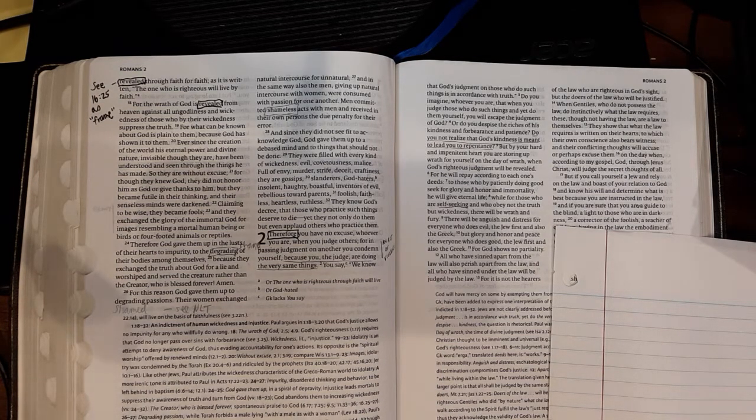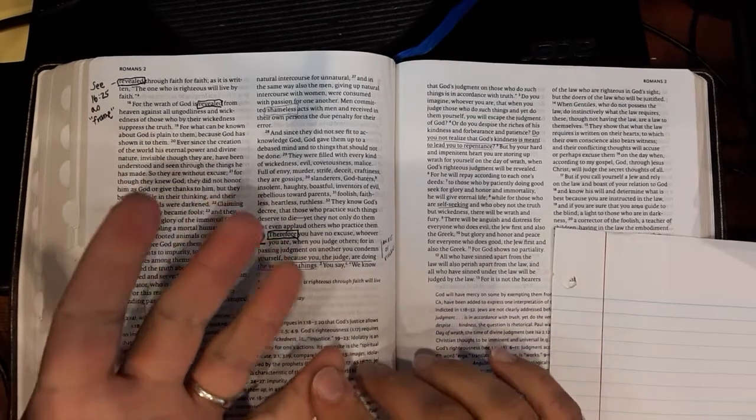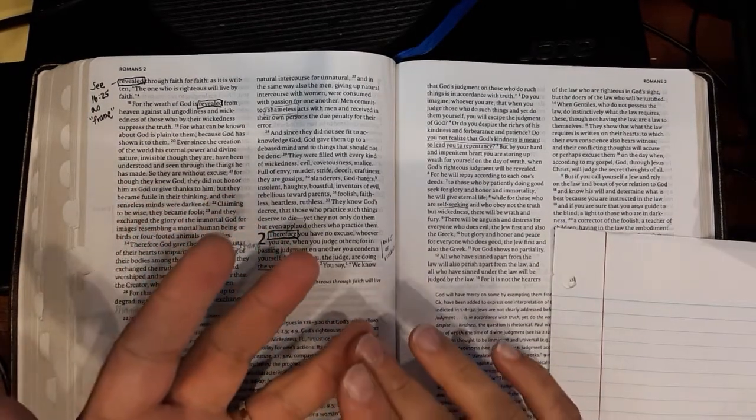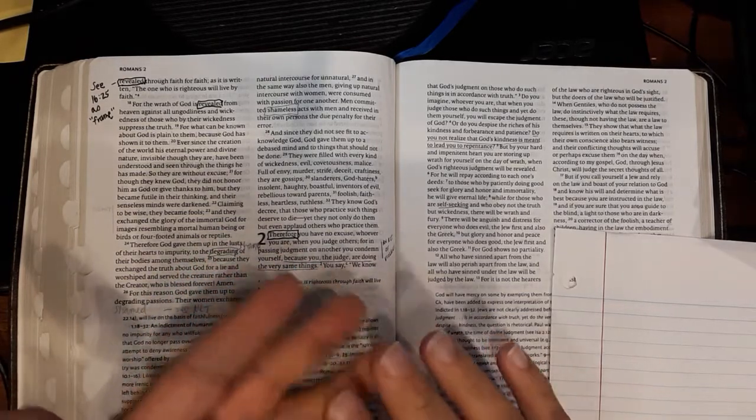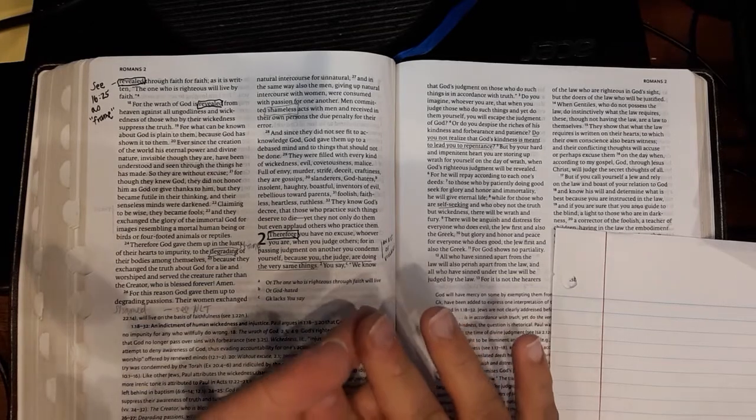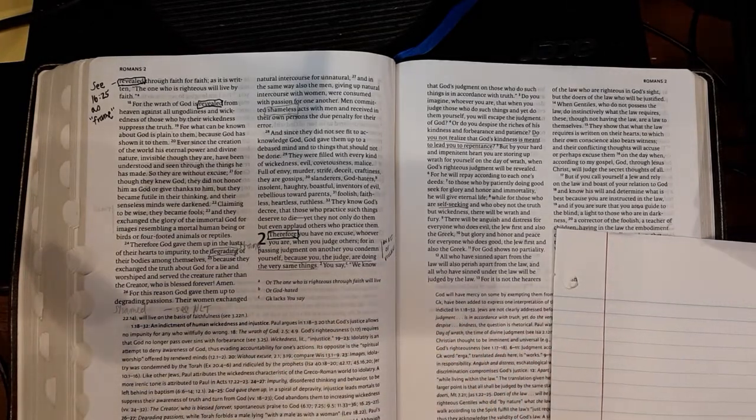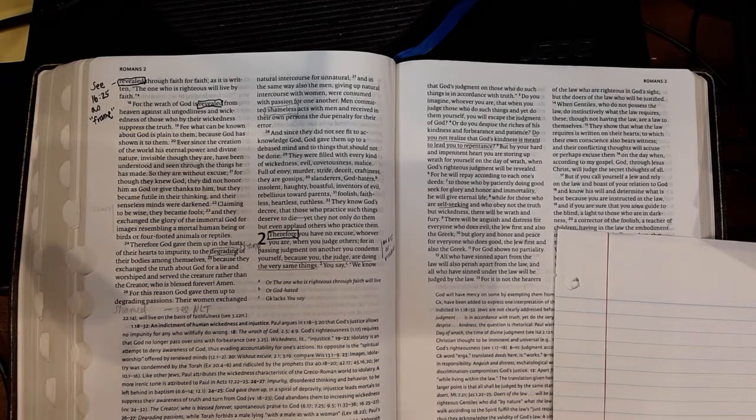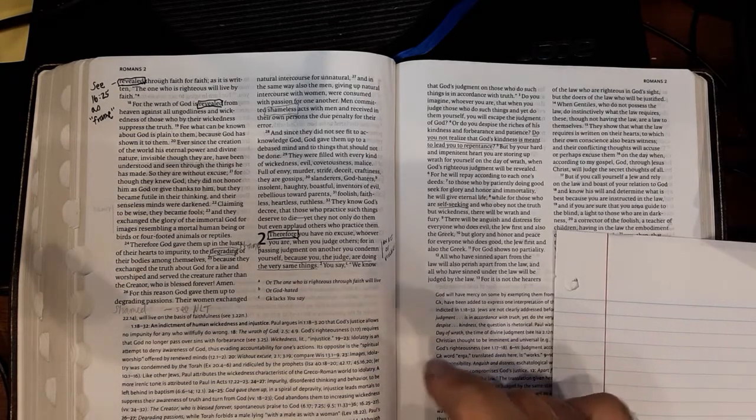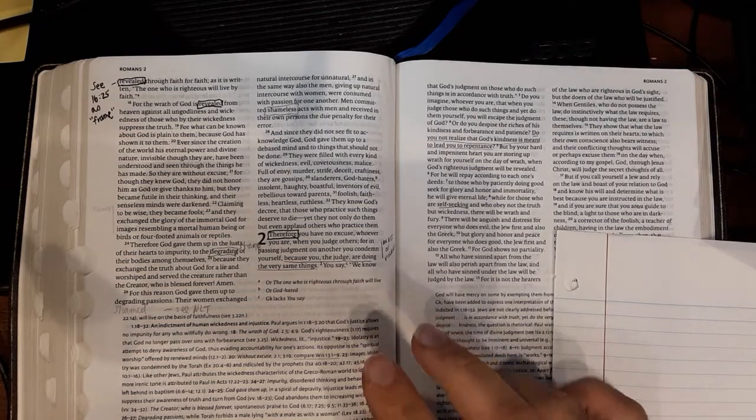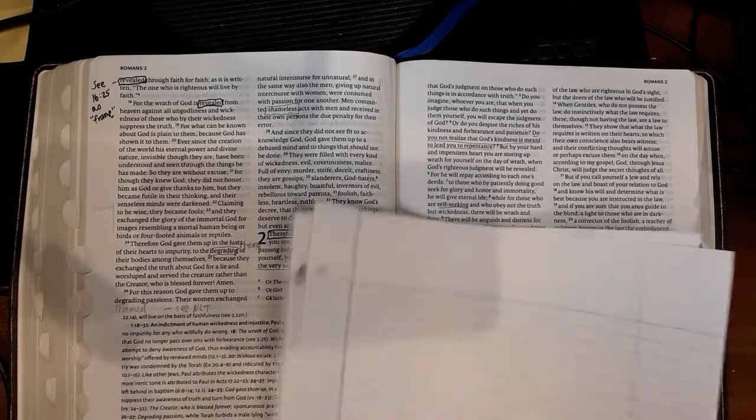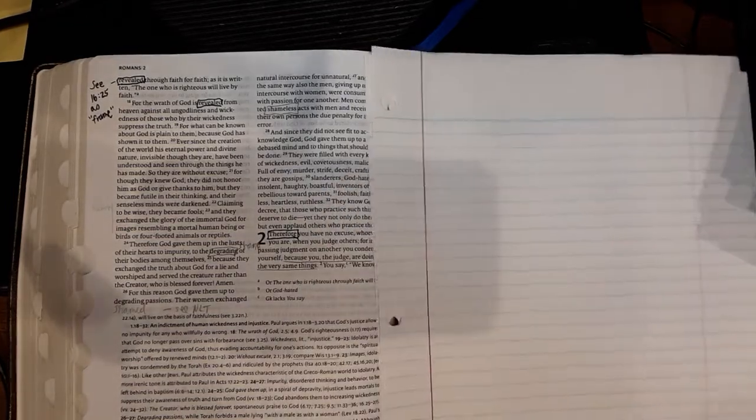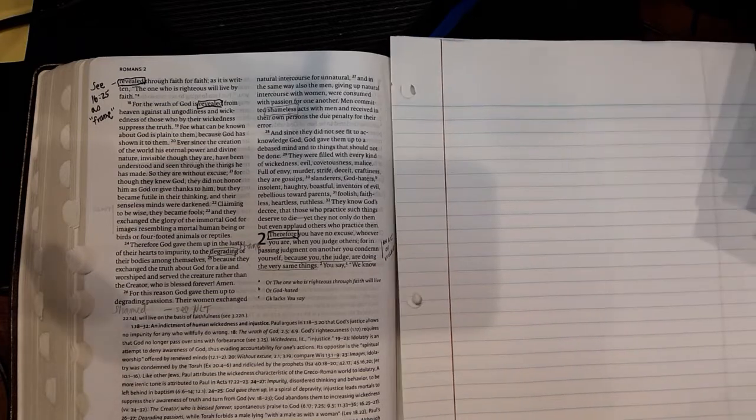Let me remind you of the purpose for which Paul is writing. He's writing, one, to unite the church, two, to introduce himself and his understanding of the gospel, and three, to build a foundation for missions that he hopes will reach into Spain and Western Europe. So with that said, he is bringing together two conflicting communities in the churches in Rome.